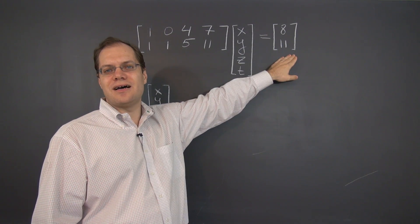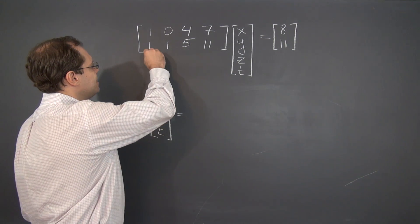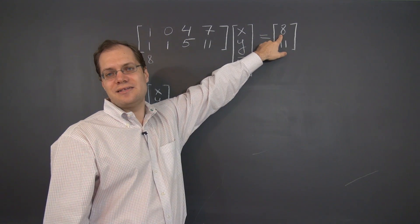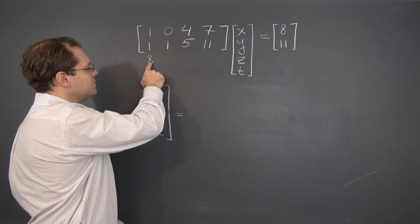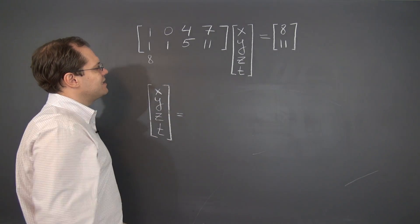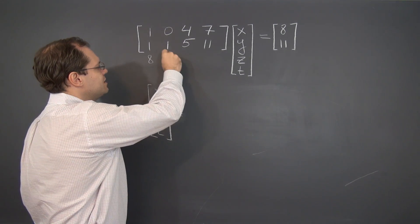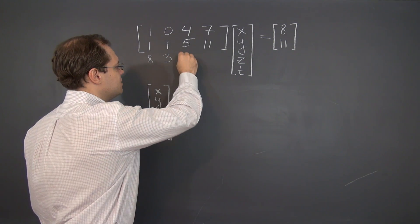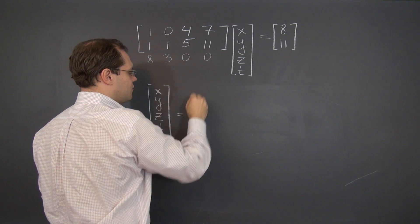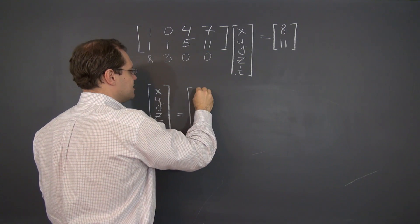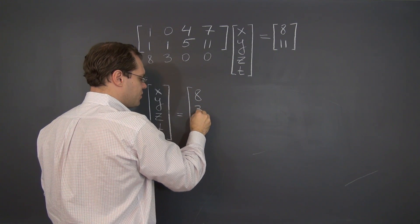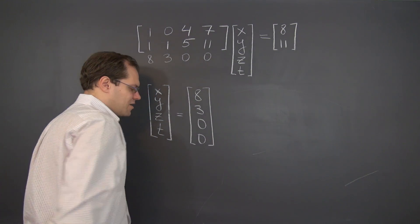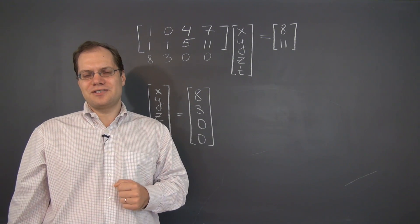To get the column on the right-hand side, we clearly need 8 of the first column because that's our only chance to get this 8 right. And once we have 8 of this column, which gives us 8 in the second entry as well, we only need to add 3 of this column to get 8, 11. We don't need any of the third or any of the fourth. So that gives us our particular solution: 8, 3, 0, 0. And we're a third of the way done solving this problem.